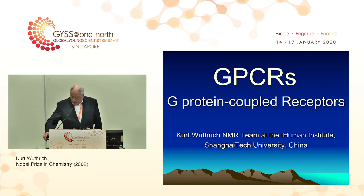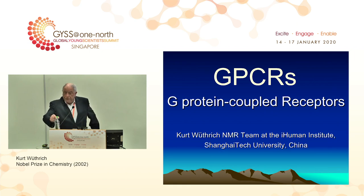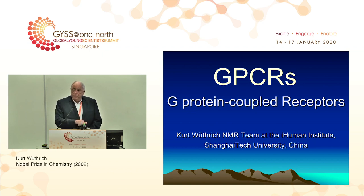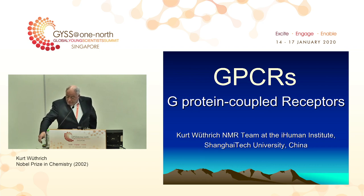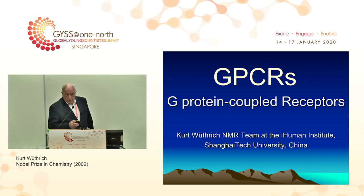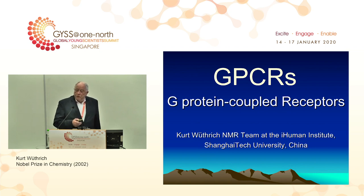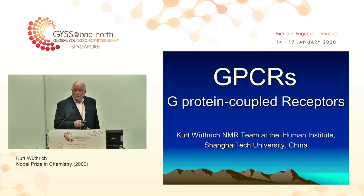G-protein-coupled receptors are plentiful in our bodies. We have, according to the best available results, 826 different GPCRs in our body, and these GPCRs support major physiological functions. Therefore, they are important targets for drug design. Presently about 35% of all FDA-approved drugs target GPCRs. And of the 826 GPCRs, only about 40 have so far been targeted for drug development.